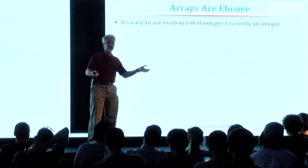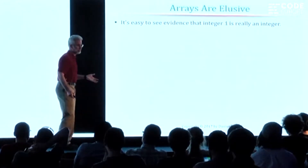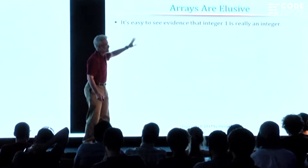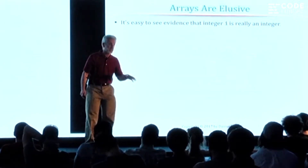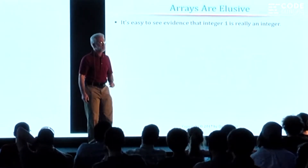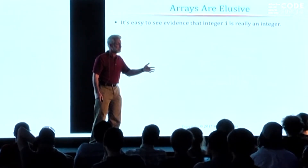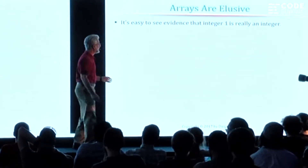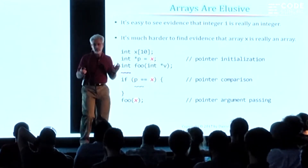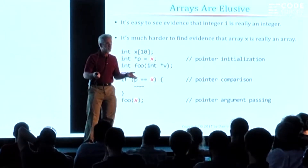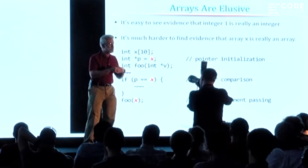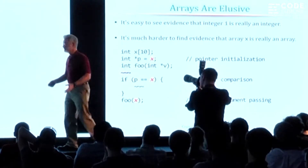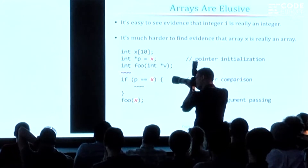But does the array remain an array? Yes, it does. What's really tricky and what I think is the cause of most of the confusion is that it's easy to see evidence that the integer i really is an integer, because later on in the same code you can access i and see it's still an integer. But with arrays, any time you just look at the array, with very rare exception, it says 'I'm a pointer.' The transformation of arrays into pointers is so common that most C and C++ programmers start thinking it's just a pointer.